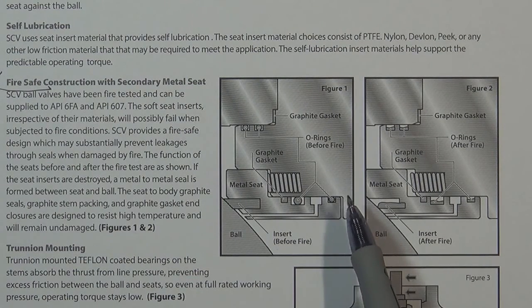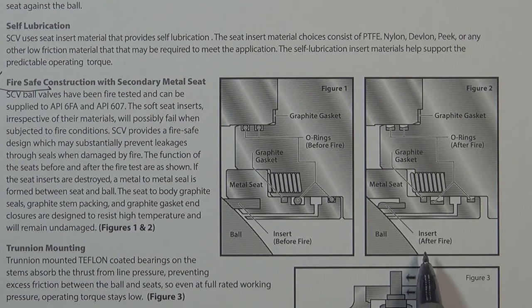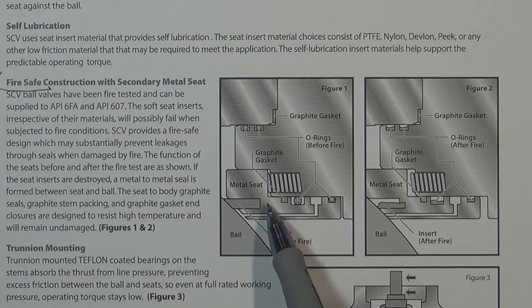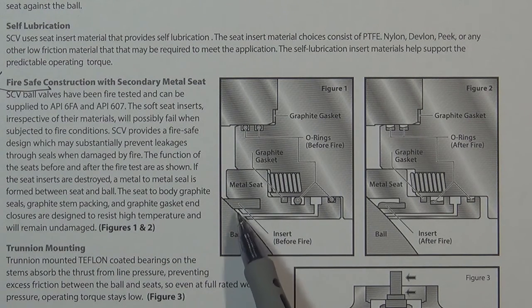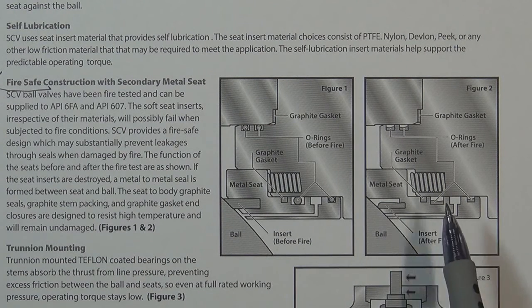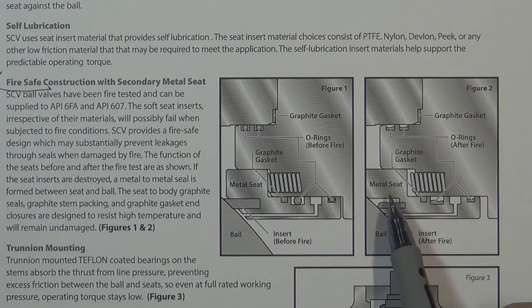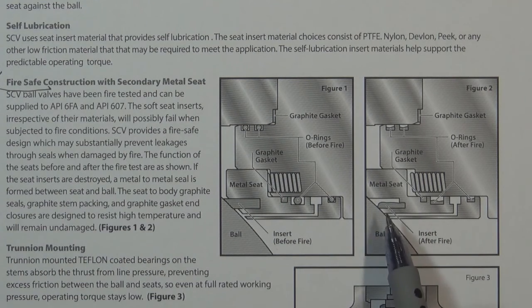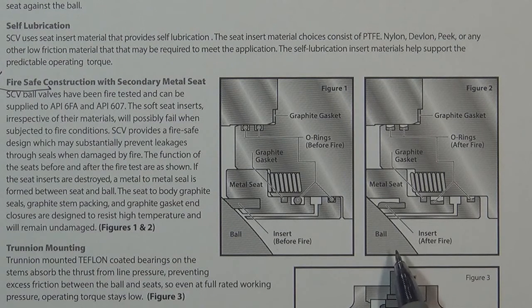This illustration shows how a fire-safe ball valve works before and after a fire. Two types of materials are used to make the ball valve seat: the outside is a metal seat with a soft seat inserted inside. In normal temperature conditions, the soft material cooperates with the ball to seal pressure. When fire occurs, the fire destroys the soft seat and other soft materials, but the metal seat remains. The metal seat is pushed by the spring and pressure tightly against the ball, creating a secondary metal-to-metal seal to keep the valve sealed.